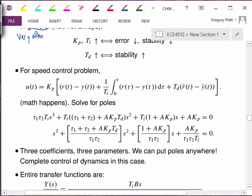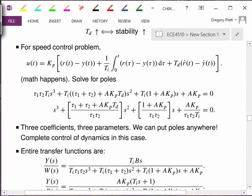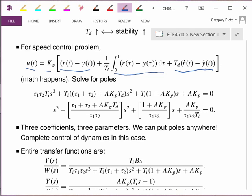For the speed control problem of the DC motor that we've been looking at, we can put this compensator in. So notice that U of T is the output of our compensator equals Kp times the error plus Kp times 1 over Ti times the integral of the error plus Kp times Td times the derivative of the error. And we can go through about a page of algebra and put this into the transfer function of the plant and find the closed-loop transfer function and solve for the poles. So I'll spare you the details. You're welcome to do that yourself.